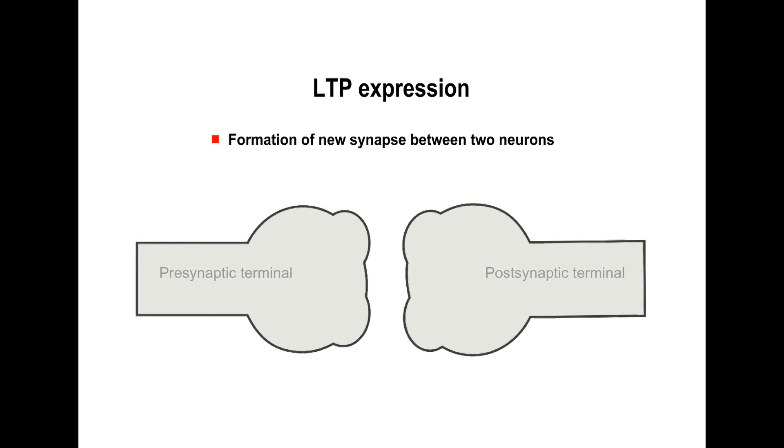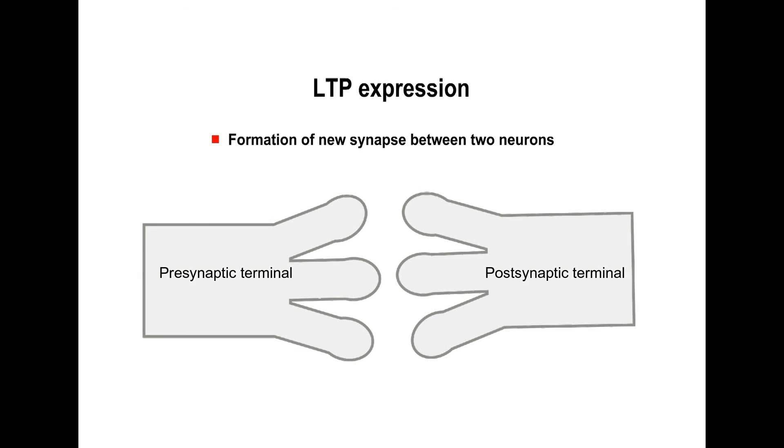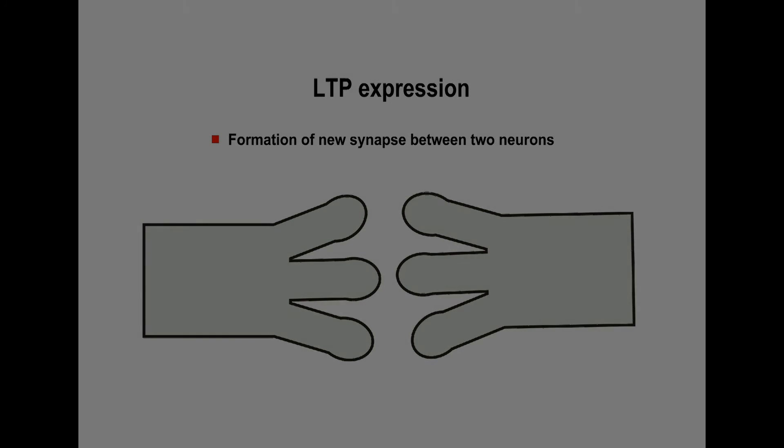How does LTP expression occur? There is formation of new synapse between two neurons.